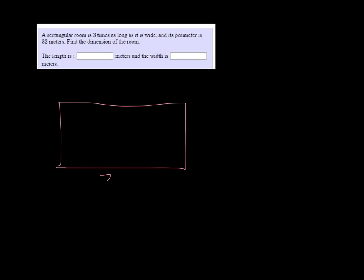We'll say that this is the length here, and it's three times—we'll call the width X, so the length is 3X. And its perimeter is 32. Perimeter is just adding up all the sides.